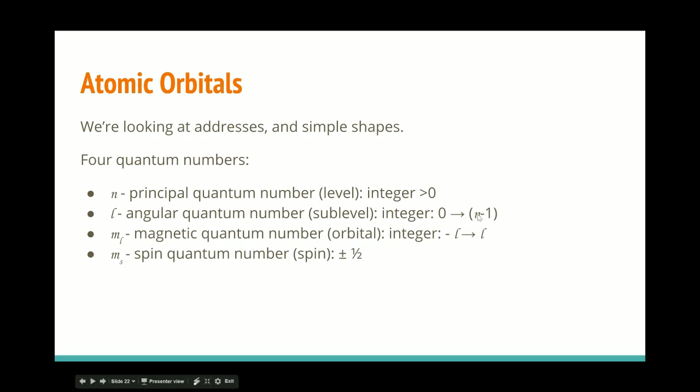So if n equals one, then l can be zero. If n equals two, l can be zero, or l can be one. If n equals three, l can be zero, it can be one, it can be two.